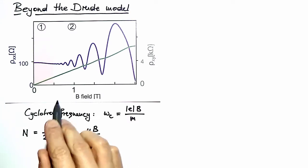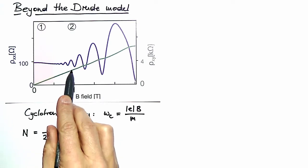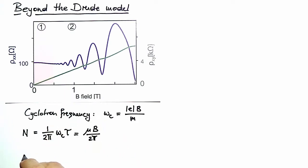Now taking our data and working out a number for, let's say, 1 tesla, where these oscillations have started, we find that N is mobility, 27 meter squared per volt second times magnetic field, 1 tesla, is 27 divided by 2π. 2π is roughly 6, so we end up with a number of 4.3.